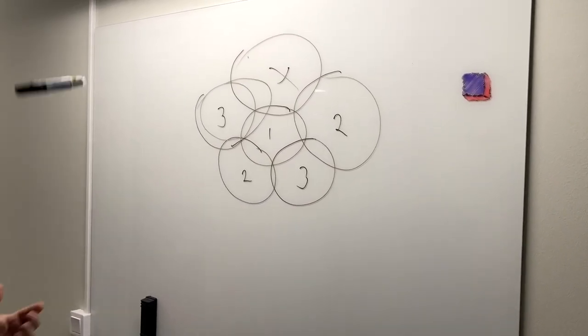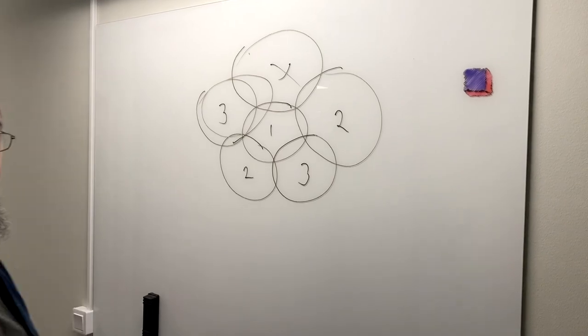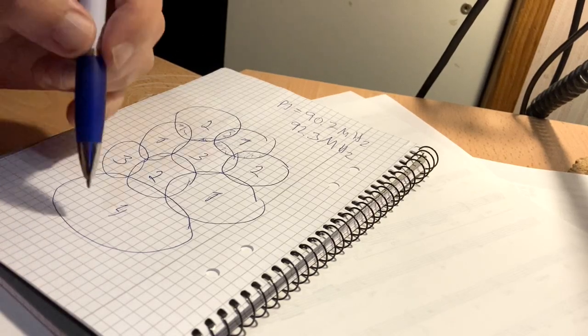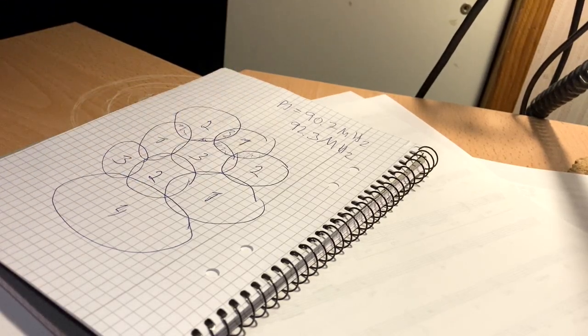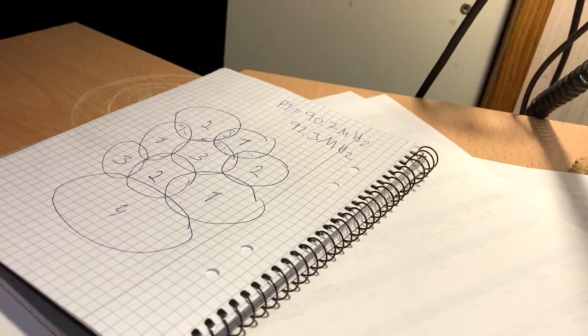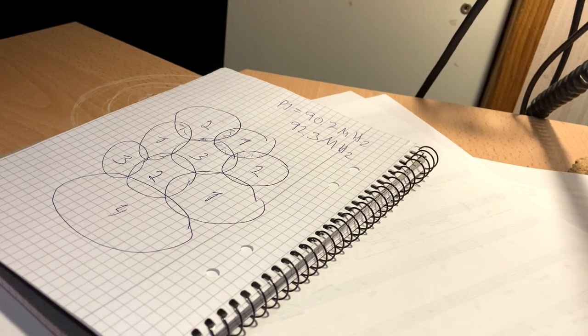There is a theorem called the four-color theorem. It says if you draw areas where no two neighboring areas have the same color, four colors will always be enough. So you could plan the frequency range for an entire country using only four sets of frequencies.